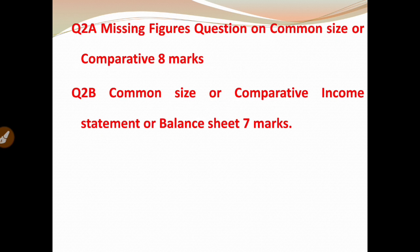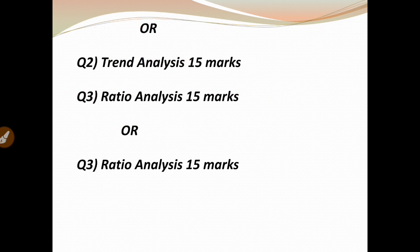In question number 2A, missing figures exercises are asked — usually common size and comparative missing figures have been asked. You can focus more on the 8-mark question. Question 2B asks for common size and comparative income statement or balance sheet — you just have to convert it — which will carry 7 marks. If you don't solve both questions, an alternative of 15 marks will be available.